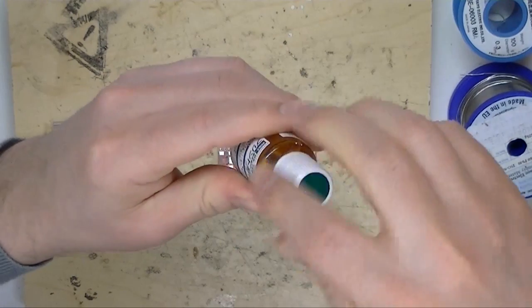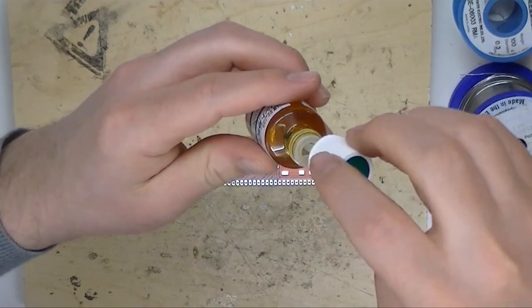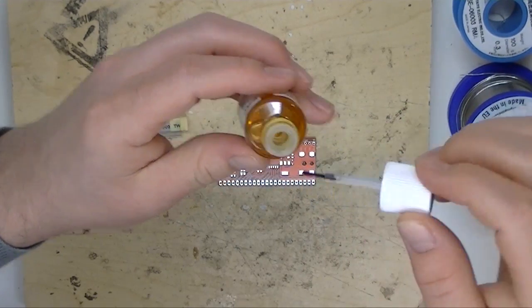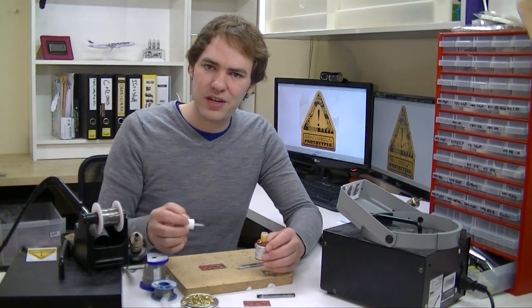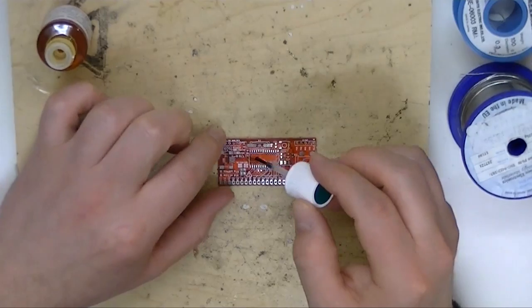Instead of being a syringe, it's a brush-on flux. So here in the cap, we have a little brush like this. So I'll brush it onto the board and then put the chip on and start soldering there.